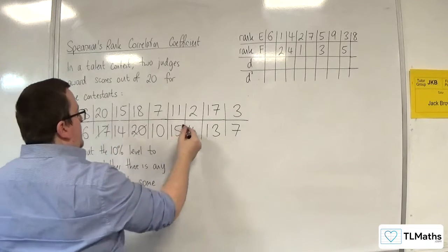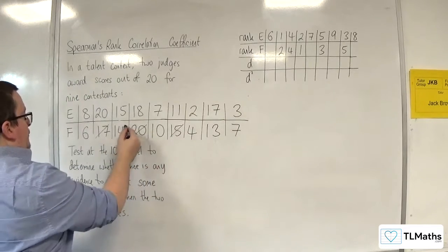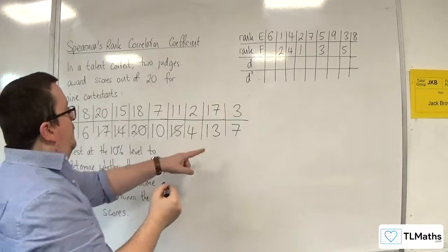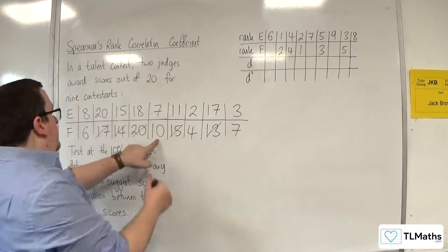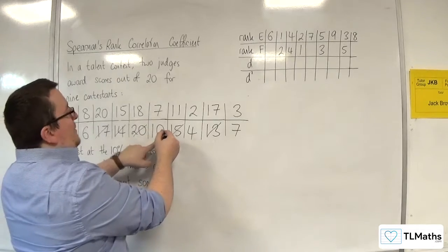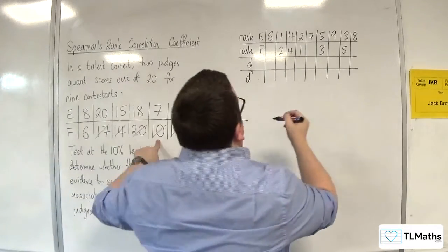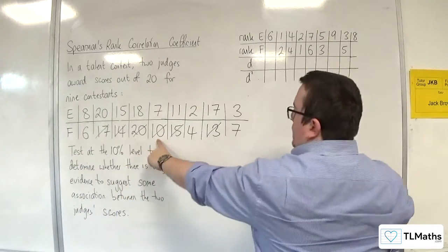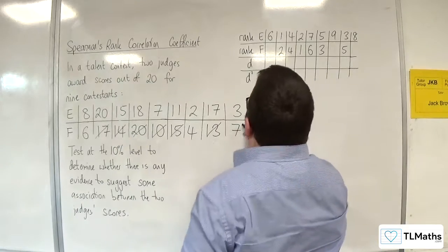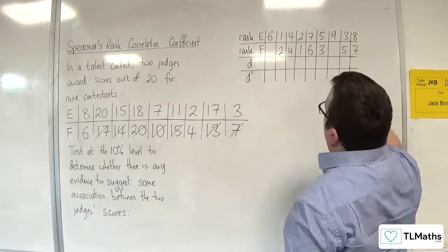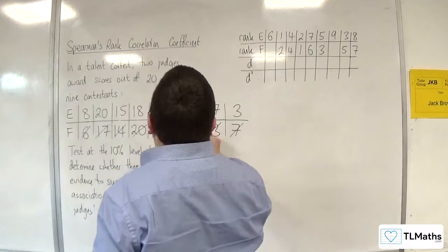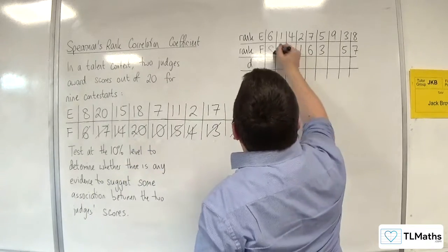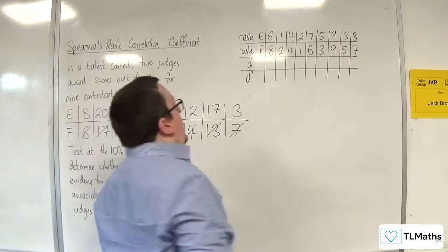1st, 2nd, 3rd, 4th, 5th. Now we've got the 10, which is going to be 6th. Then we've got the 7, so that's 7th. Then we've got the 6, and then the 4, so 8th, then 9th.